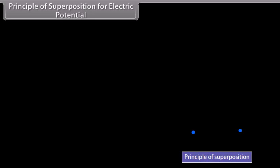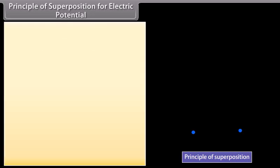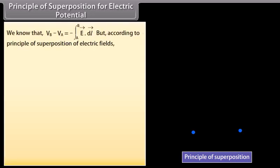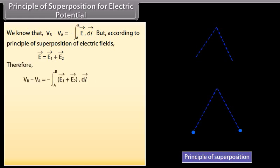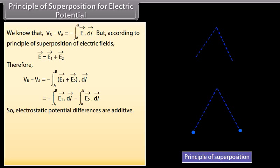Principle of superposition for electric potential. Consider two point charges plus Q1 and plus Q2. Take any two points A and B in the combined electrostatic field of the two charges Q1 and Q2. Choose a curve L between A and B. We know that V_B minus V_A equals minus the integral from A to B of E vector dot dL vector. According to the principle of superposition of electric fields, E vector equals E1 vector plus E2 vector. Therefore, V_B minus V_A equals minus the integral from A to B of E1 vector dot dL vector, and so electrostatic potential differences are additive.